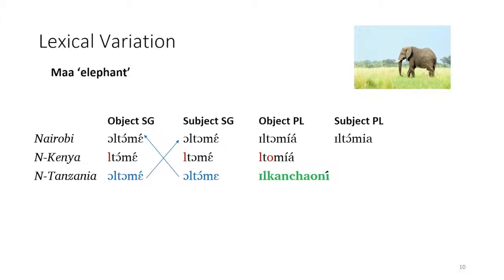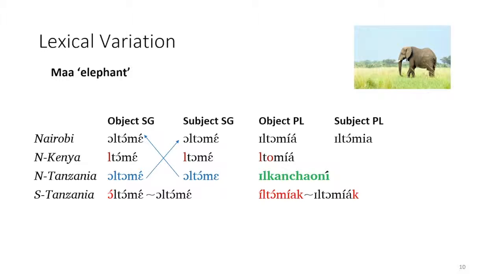In northern Tanzania, working with a Kisongo speaker, I was surprised to find that the tone patterns related to case marking switched — so ultome, identical to the subject form in the Nairobi region, was actually the form he used as the object form. That could set up confusion depending on discourse context. For the object plural, we found a suppletive relationship with ulkanchaoni being the object plural form. Going down to southern Tanzania, Parakuyo region, we found yet more tone variations — the object singular would vary even for the same speaker between ultome and ultome, and the object plural as iltomiak or iltomiak. Tonal variation in Parakuyo definitely needs more research.